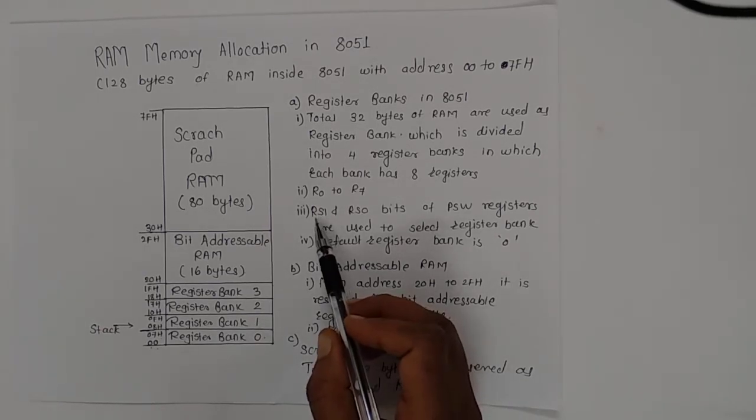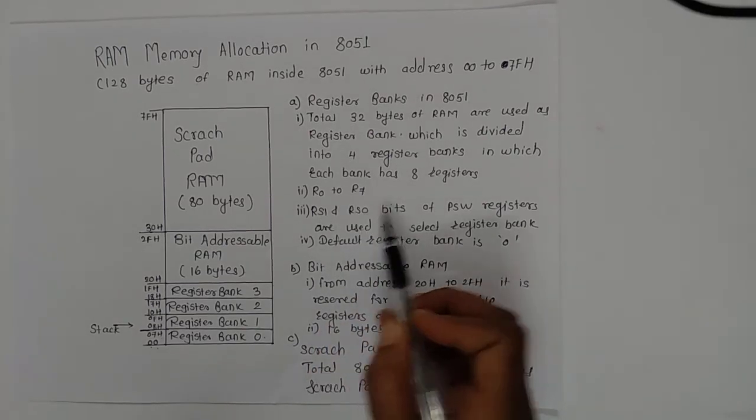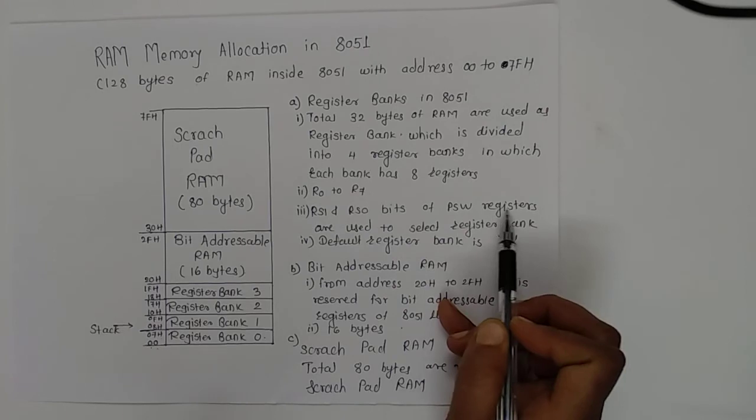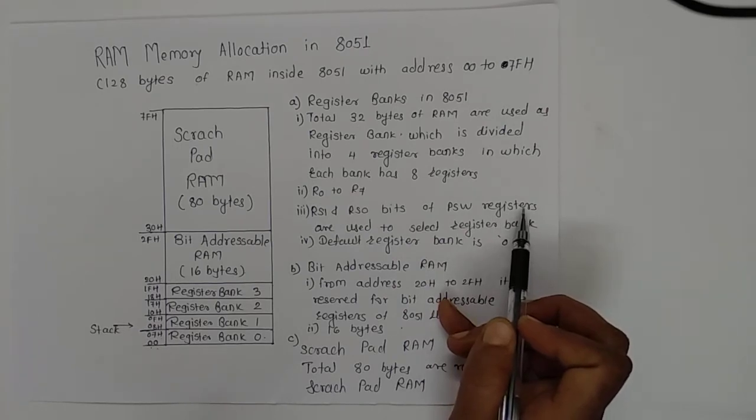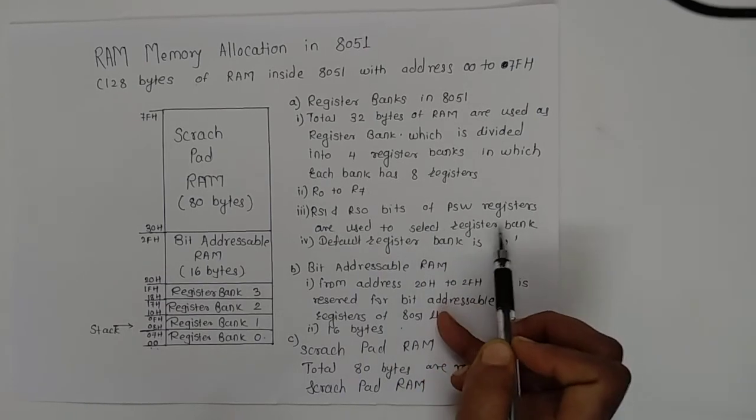Here we have RS1 and RS0, which are bits of the PSW register, and they are used to select the register bank.